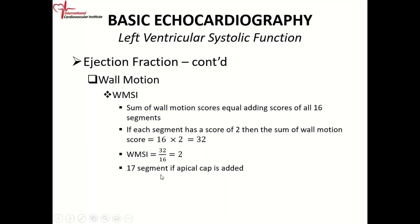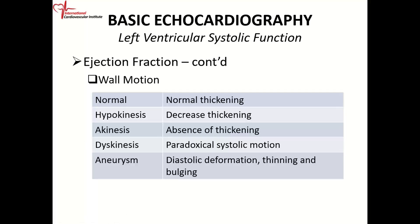You can also use 17 segments, where you just add the apical cap. To summarize the scoring: normal gets a score of 1 — normal thickening; hypokinesis is score 2 — decreased thickening; akinesis is score 3 — absence of thickening; and dyskinesis means paradoxical systolic motion — when it's supposed to come in, it goes out instead. Aneurysm involves thinning and permanent dilatation, and is grouped with dyskinesis as score 4.